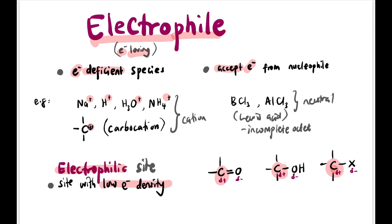The carbon is not yet a full electrophile, but it is ready to be attacked by a nucleophile at any time. We need to memorize these three functional groups: carbonyl, hydroxyl, and halogen — all contain an electrophilic site.